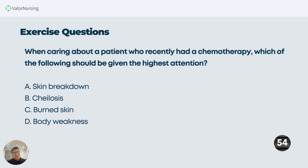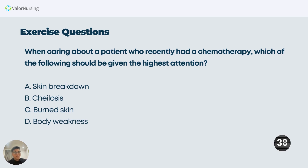When caring for a patient who recently had chemotherapy, which of the following should be given the highest attention? The options are: A) skin breakdown, B) chylosis, C) burn skin, D) body weakness. Letter A and letter C are essentially the same — burn skin and skin breakdown are identical options. We cannot have two right answers in a given question, so eliminate both.